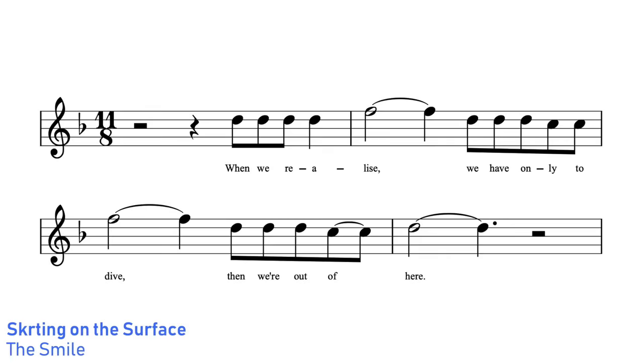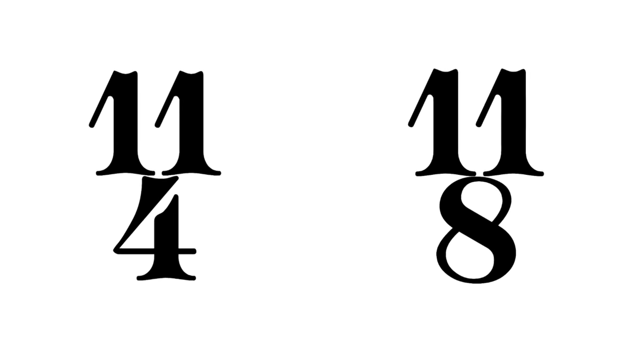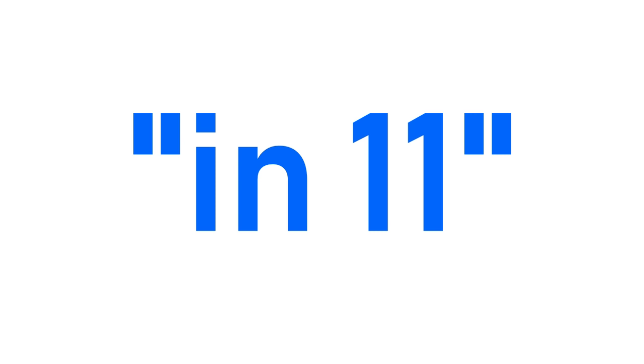So ideally, a song like Skirting on the Surface I would describe as being in 5 and a half time, but because we can't have a 5½/4 time signature, we instead double both values to get 11/8. Ultimately though, it doesn't really matter which you choose. 11/4 and 11/8 are ultimately interchangeable, and many musicians will just refer to songs in these meters as being in 11 to keep things simple.